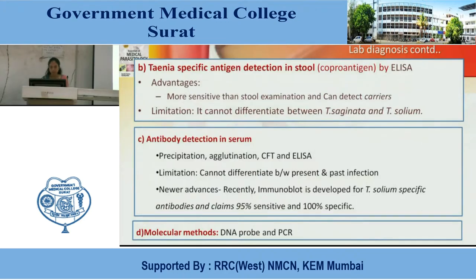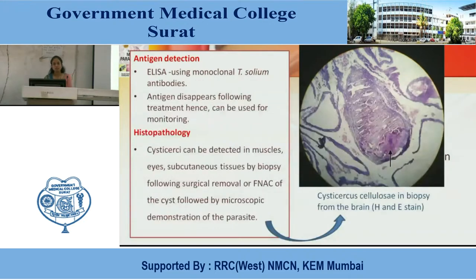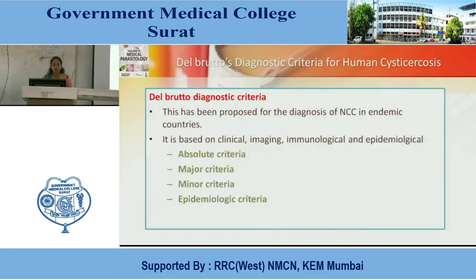Cysticercosis: radiodiagnosis by imaging — CT and MRI scan detects hypodense area and hyperdense eccentric area inside the vesicle. Antigenic detection using monoclonal T. solium antibodies; antigen disappears following treatment, hence can be used for monitoring. Brain biopsy — histopathology can detect cysts in muscles, eye, and subcutaneous tissue by biopsy following surgical removal or FNAC of the cyst, with microscopic demonstration of the parasite. Diagnostic criteria for human cysticercosis based on clinical, imaging, immunological, and epidemiological factors — absolute criteria, major criteria, minor criteria, and epidemiological criteria.